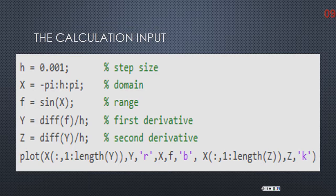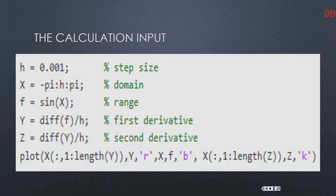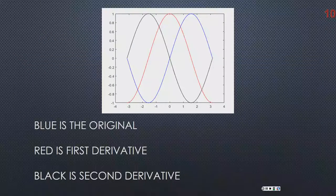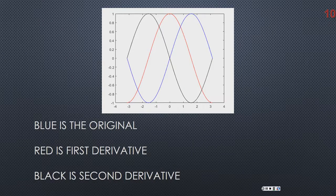You have to start off with how you want your increments done and set your x equal to something. That's your domain, and then you find your range by setting it equal to x. Then if you want to do the first and second derivative, you use the differential equation over h. That shows you the plot with all your lengths and how big you want your actual chart to be. The key derivative aspect is that you put it over h. Here's the example — the original starting function, the red is the first derivative, and the black line is the second.